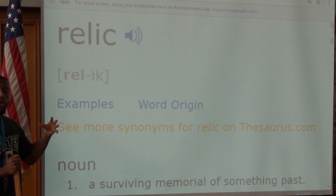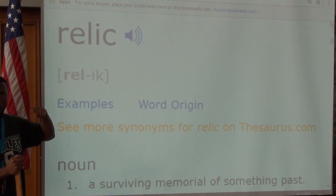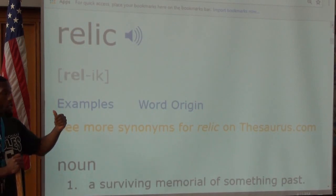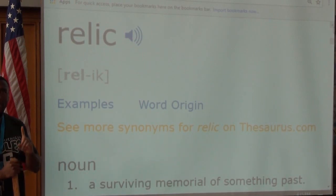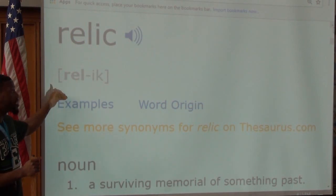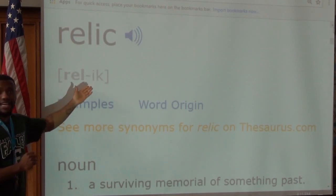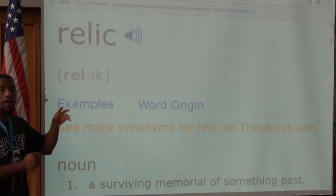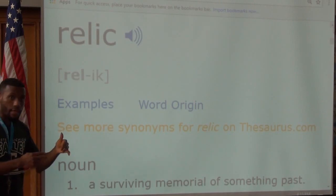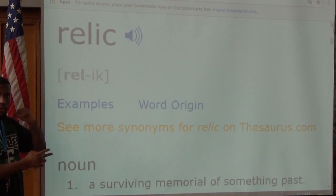In some reference material like a dictionary or online, you may see that it doesn't have syllables in bold, but instead puts an accent mark over it — like the accent mark on the E at the end of Beyoncé's name — to indicate which syllable receives the stress. Whenever you have a word that is two or more syllables, one of those syllables has to have the emphasis or the stress. In this word it's the first syllable. The emphasis goes on 'rel,' so it's 'rel-ic.' Notice: 'rel-ic' versus 'rel-ic' — the difference in stress changes the sound.